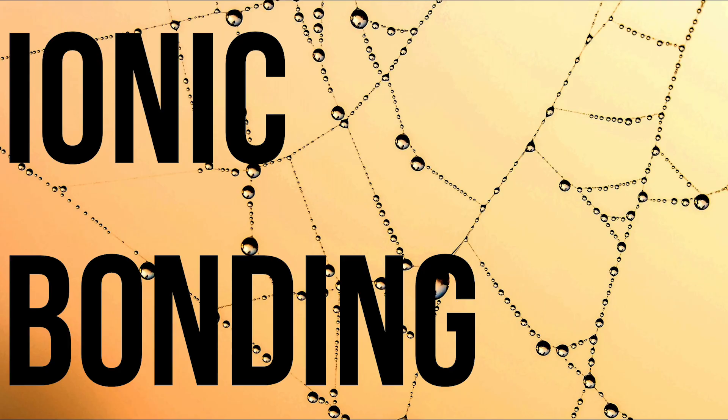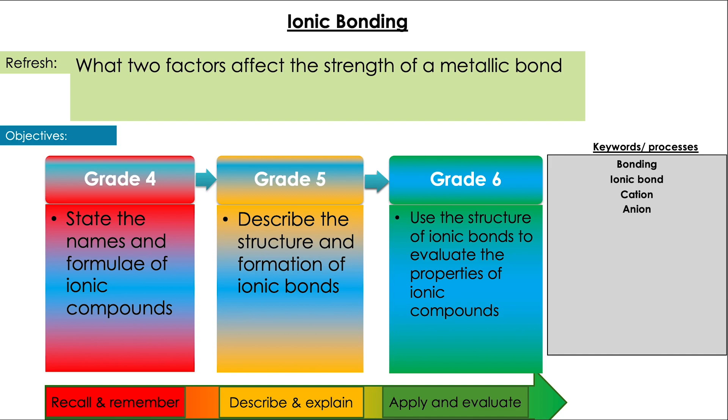Hey guys, welcome back to Pop'em Up Chem and the last video in the Unit 4 and 14 video series. In this video we're going to be looking at ionic bonding. We're going to look at the nature of ionic bonding and some of the properties that arise from this type of bonding. Firstly though, what two factors affect the strength of a metallic bond?